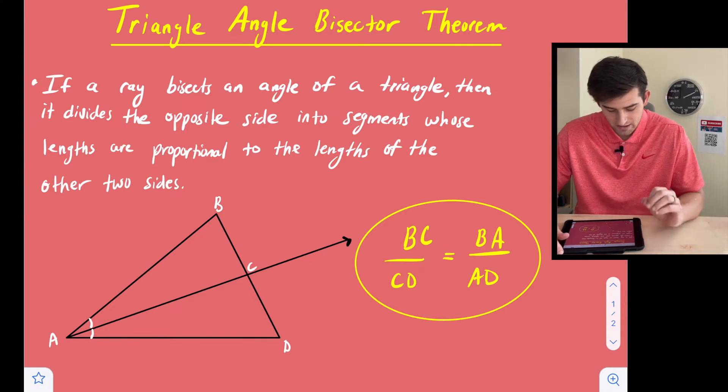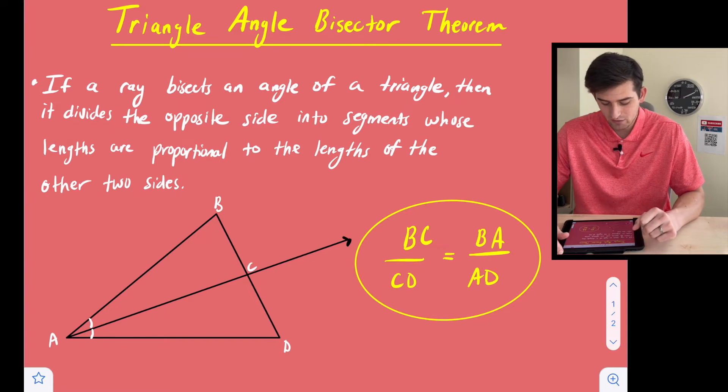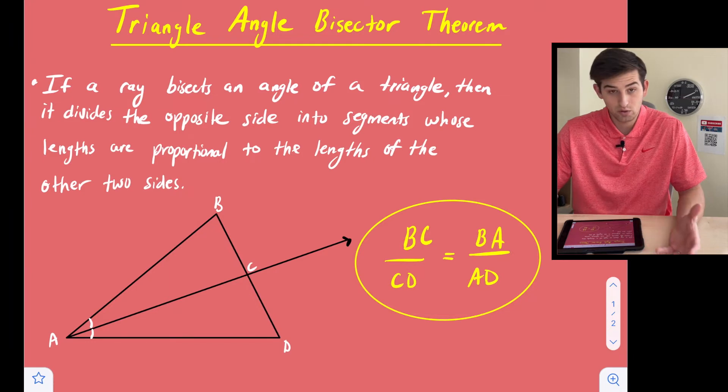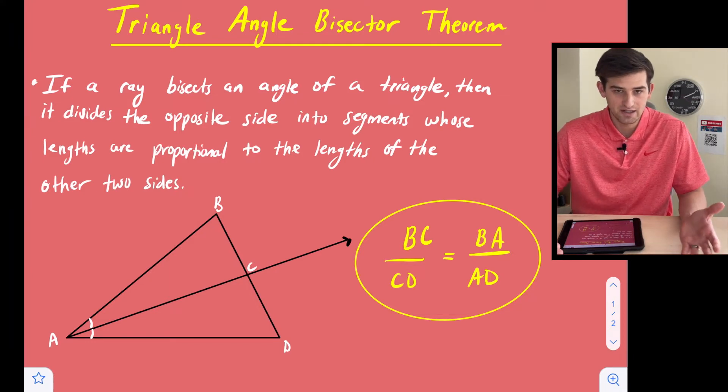So let's read what it states. If a ray bisects an angle of a triangle, then it divides the opposite side into segments whose links are proportional to the links of the other two sides, and that means the other two sides of the triangle.